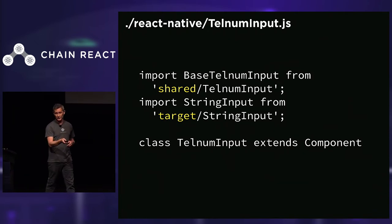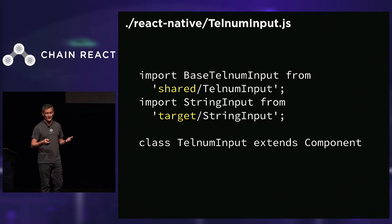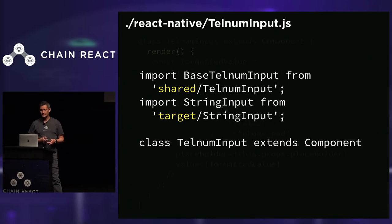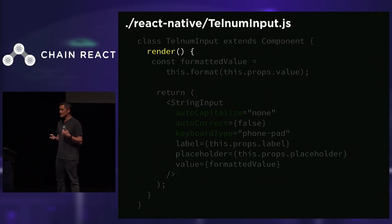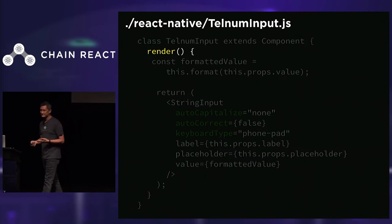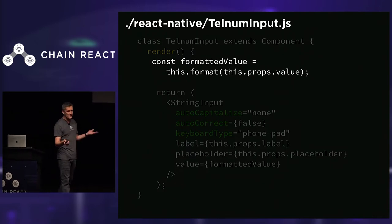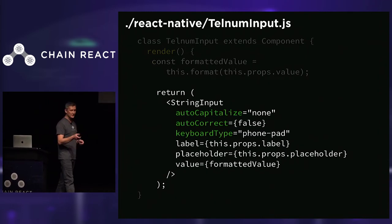We make a file in our React Native folder — calling it the same name, telnuminput.js, with the class also called TelNumInput extending the basic component. There are two key imports: the first imports from our shared library containing all the business logic; the second imports a platform-specific string input field we've already created. The implementation of our mobile telnum input field is made up of only a single render function — if that's the only thing different from the web implementation, it means we did a good job of separating out our business logic.